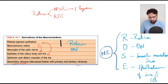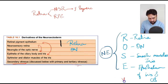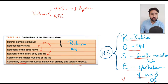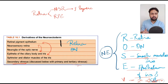To remember these in the exam, use the mnemonic ROSEV: R for retina, O for optic nerve, S for the smooth muscles of the iris, E for epithelium of the iris and the ciliary body, and V for secondary vitreous. These five structures — ROSEV — are derivatives of the neuroectoderm.